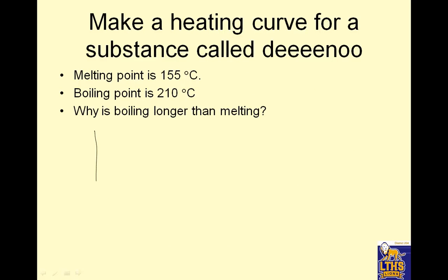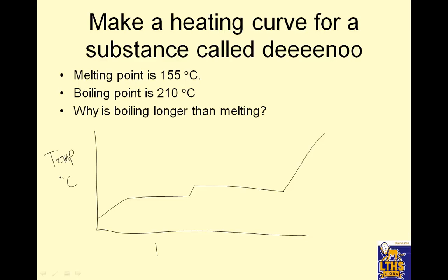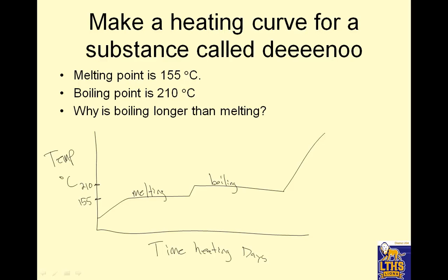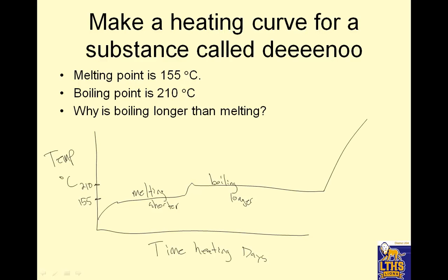Make a heating curve for a substance called Dino. Heating curves all kind of look the same. The x-axis is time of heating in days — Dino is a slow-warming substance. The melting point is 155 degrees Celsius, so we label that flat section at 155. Boiling is at 210 degrees Celsius. Why is the boiling plateau longer than the melting plateau? The boiling line should be longer and the melting line shorter.